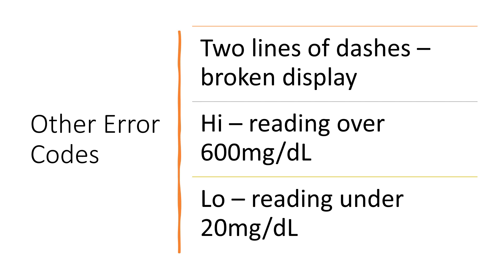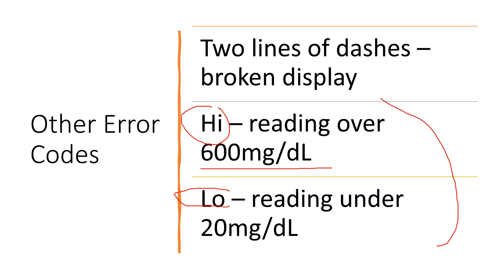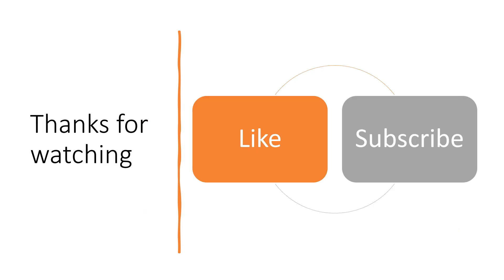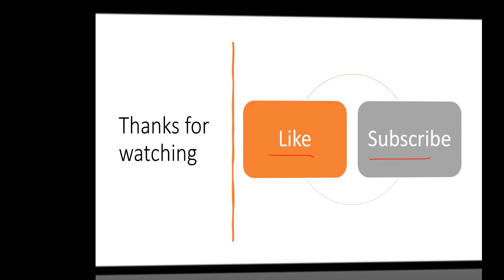Other codes: two lines of dashes indicate the display is broken and it's time to replace the meter. 'High' can mean that your blood sugar reading is over 600 milligrams per deciliter. 'Low' could mean that your reading is 20 milligrams per deciliter or lower. You'd want to retest in both situations, and if it continues to read high or low, seek medical attention. Thanks again for watching — I hope you found the information useful.